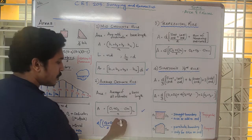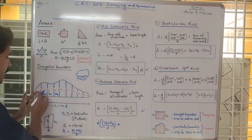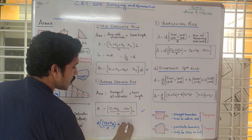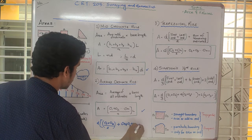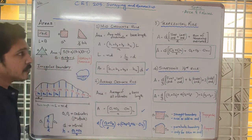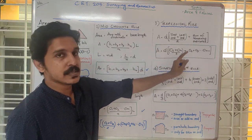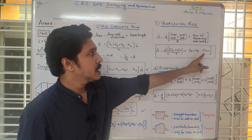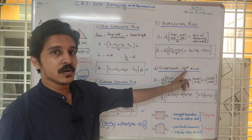For the trapezoidal rule, the area is generalized as: O1 plus O2 divided by 2, plus the sum of all remaining ordinates O2, O3, O4 up to O9, multiplied by the interval d. This is the generalized trapezoidal formula.